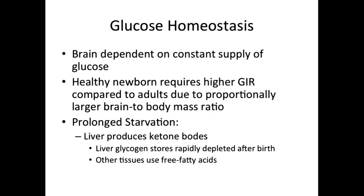The newborn brain is dependent on a constant supply of glucose. The healthy newborn requires a higher glucose infusion rate (GIR) compared to adults due to a proportionally larger brain to body mass ratio. In a state of prolonged starvation, the liver plays an important role in homeostasis by producing ketone bodies which the brain may use. However, liver glycogen stores are rapidly depleted after birth.